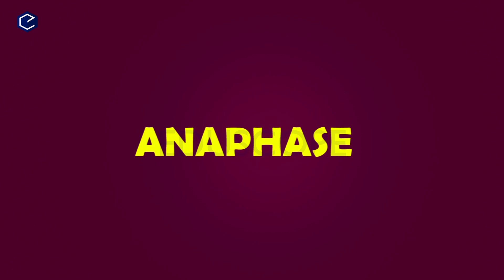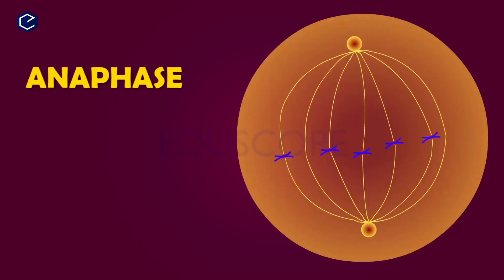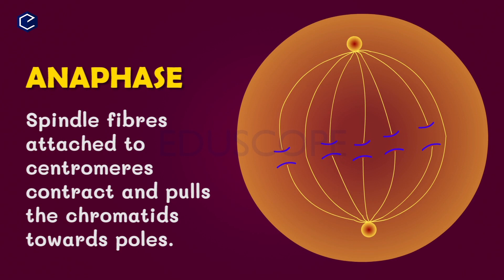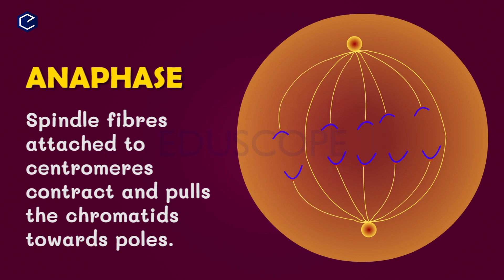The next phase is anaphase. In anaphase, the spindle fibers attach to the centromeres and contract, pulling the chromatids towards opposite poles of the cell.